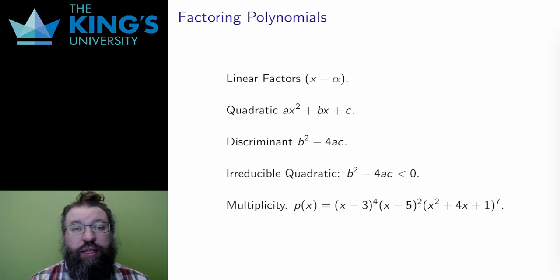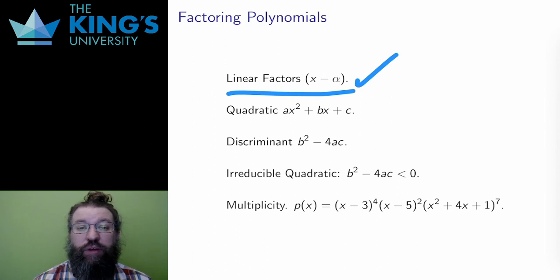Factoring a polynomial is breaking it down into smaller pieces. The nicest and easiest pieces are linear factors. x minus alpha for some constant alpha. Linear factors also correspond to roots. x minus alpha is a linear factor, only if alpha is a root, since putting alpha in for x will lead to 0 in the polynomial.